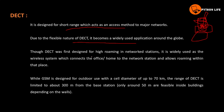DECT was first designed for high roaming in network stations. It is widely used as the wireless system that connects the office or home to the network stations and allows roaming within a local area. In a local office with 2 or 3 halls and bedrooms, DECT allows wireless phone connectivity throughout.